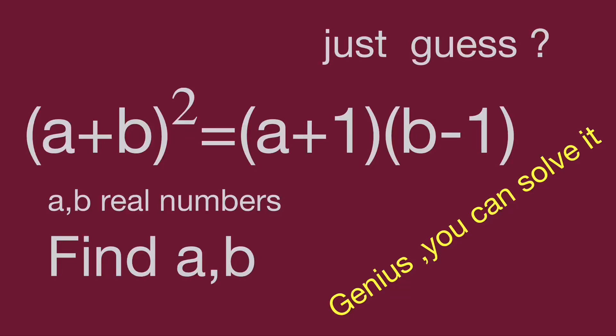Hello, you are watching Balohibo Math Genius Readers. The equation: quantity (a + b) squared equals quantity (a + 1) multiplied by quantity (b + 1), where a and b are real numbers. Find the value of a and b. It looks easy to guess the answer, but in this video please find the math operation to get the result. Would you please find the value of a and b? Pause the video and try it. Keep watching the video to get the result.